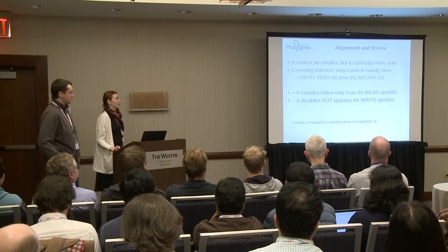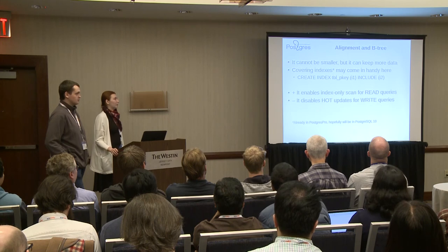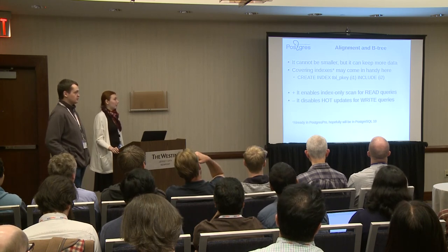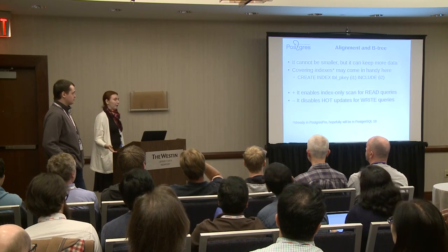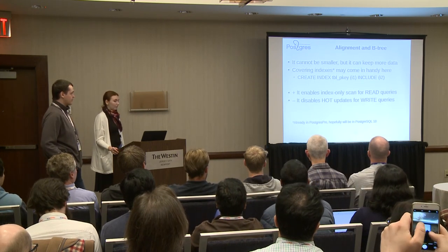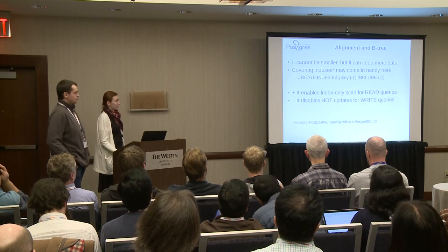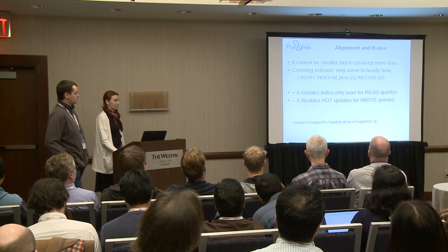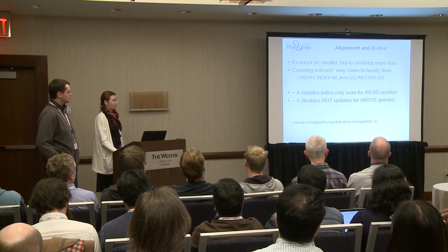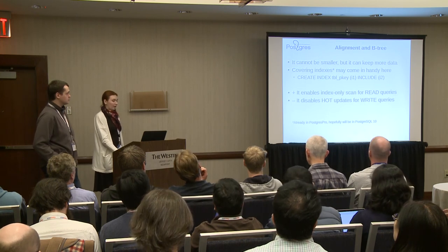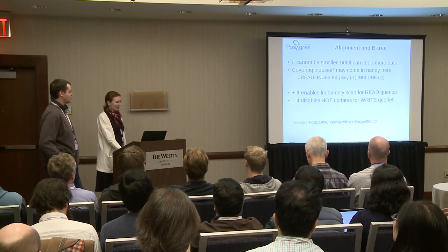That's where another PostgreSQL feature may come in handy: covering indexes. If your index cannot be made smaller — for example, a primary key on one integer field — it can probably store more data. Covering indexes allow you to add non-key columns to the primary key index. It's just another instrument to build a better schema. Like any instrument, it has cons — for example, it's not optimal for heavy write or update load. It's currently available in our fork called Postgres Pro, and hopefully it will be available in PostgreSQL 9.